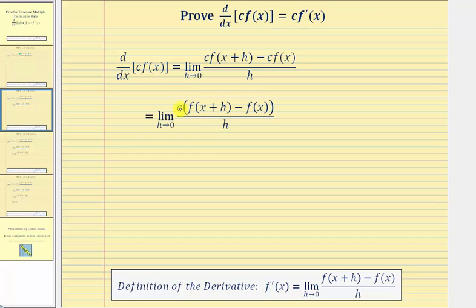So notice how here we factored out the c from the numerator, and now we can factor this constant c out of the limit.